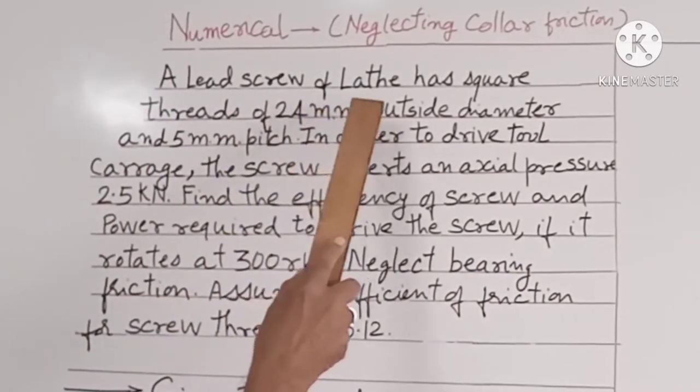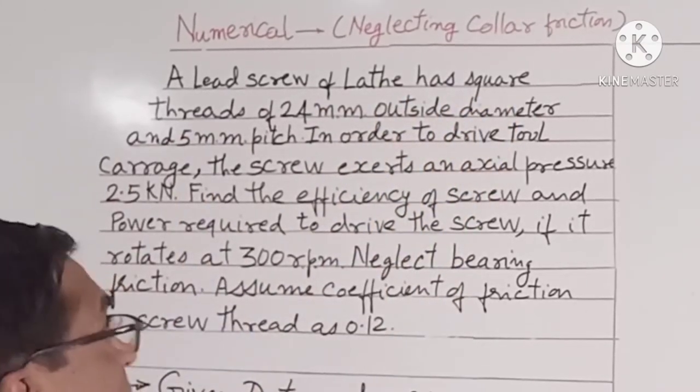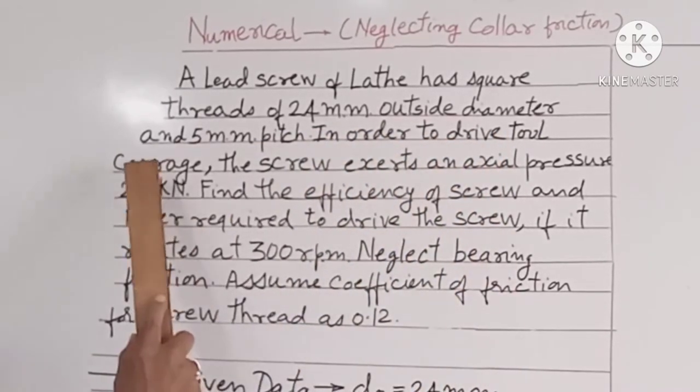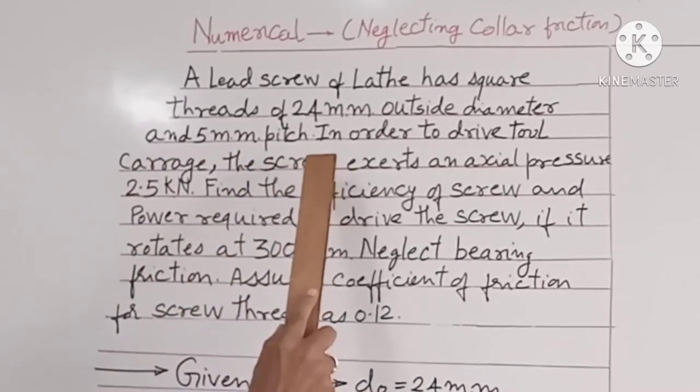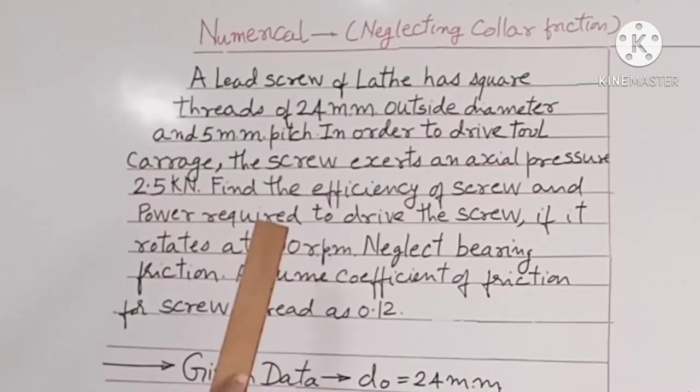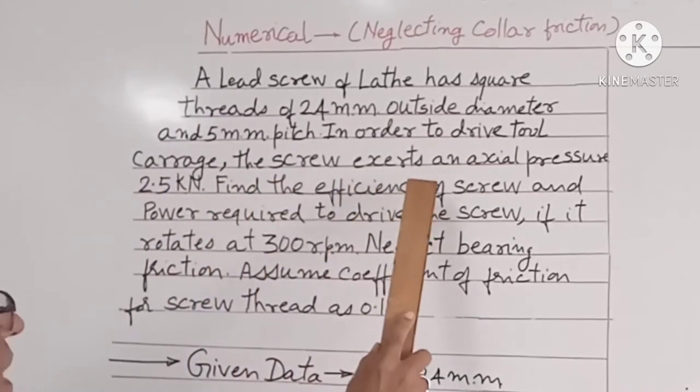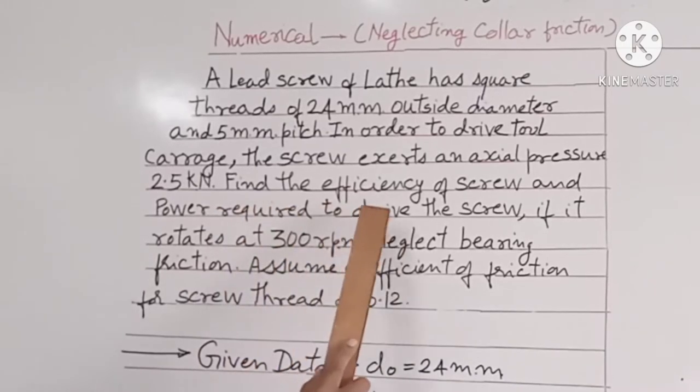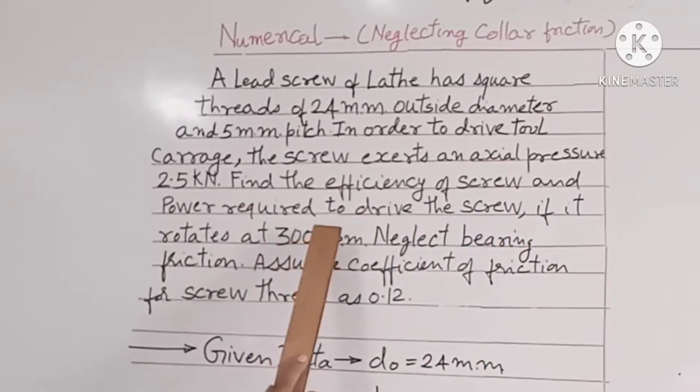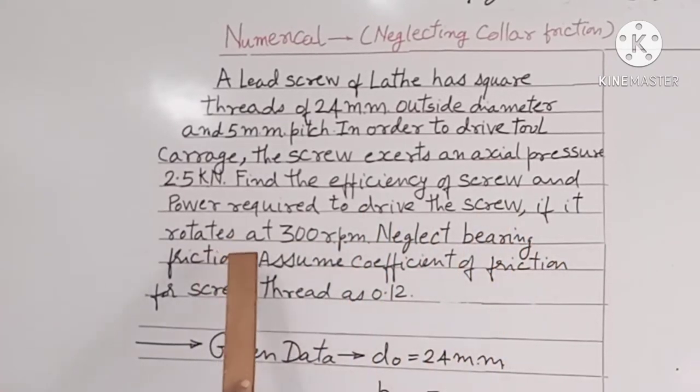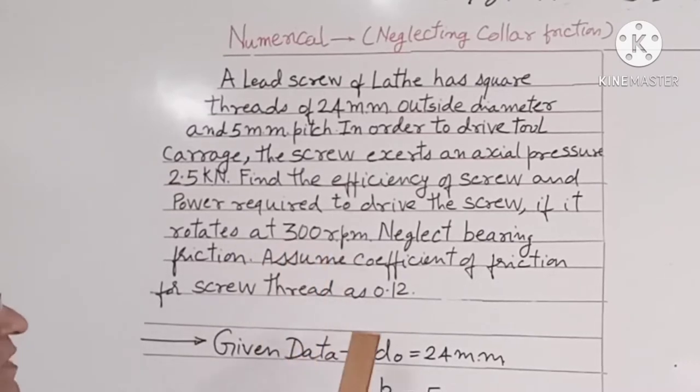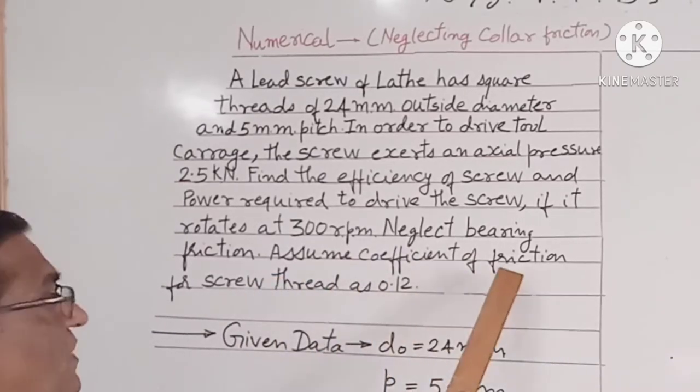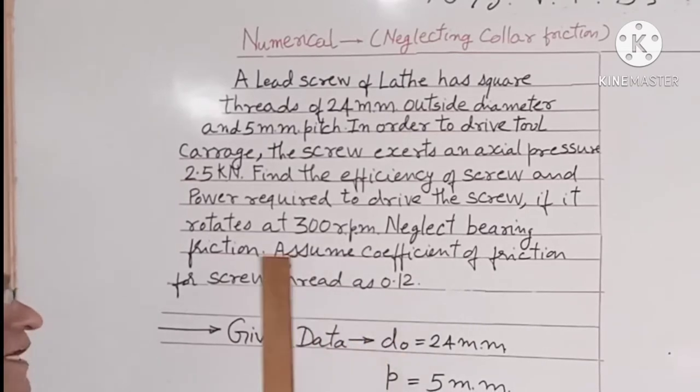A lead screw of lathe has square threads of 25 mm outside diameter and 5 mm pitch. In order to drive tool carriage, the screw exerts an axial pressure of 2.5 kN. Find the efficiency of the screw and power required to drive the screw if it rotates at 300 rpm. Neglect bearing friction, means collar friction. Assume coefficient of friction for screw thread as 0.12.